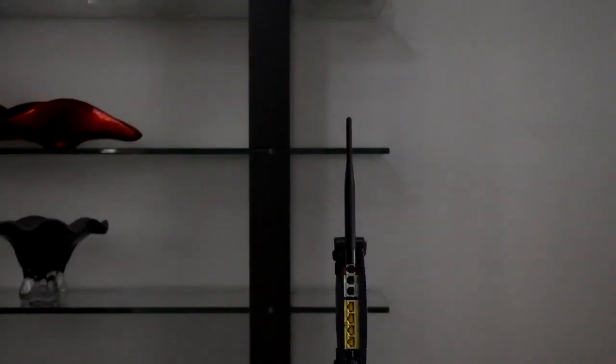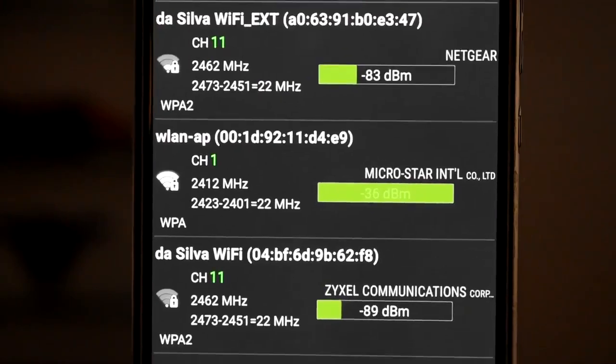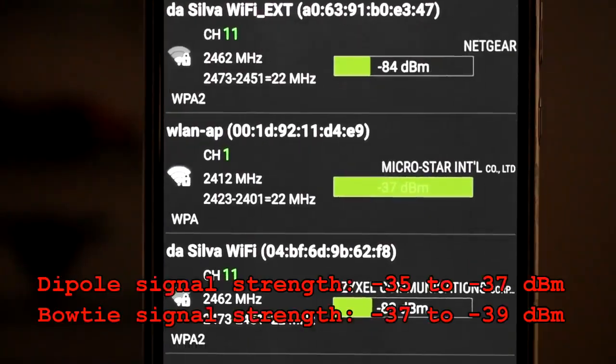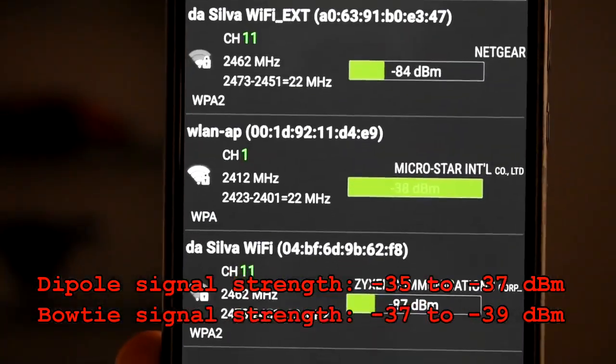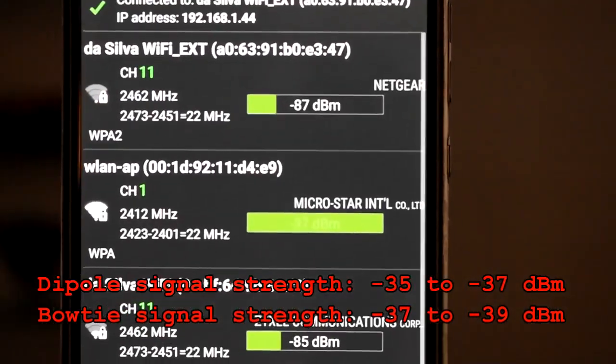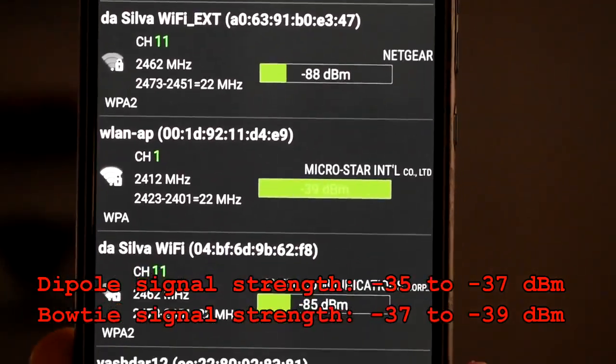The signal strength of the bow tie antenna will be compared to that of the standard WiFi dipole antenna. The signal strength ranges of each of the antennas are approximately the same. Therefore, we can say that our new antenna works.